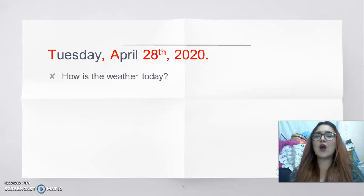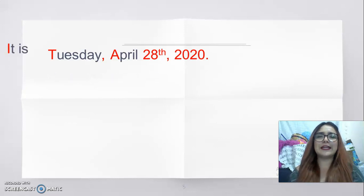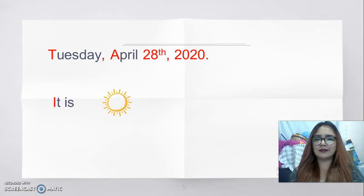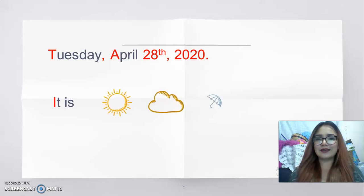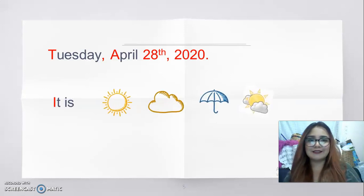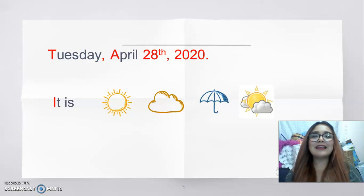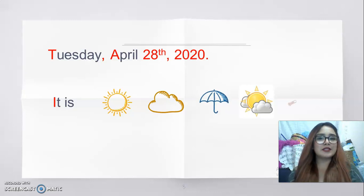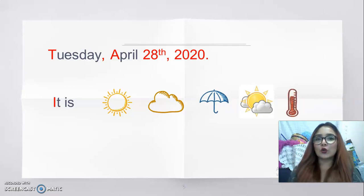How is the weather today? It is sunny, cloudy, rainy, or partly cloudy. What about the temperature? It is hot, cold, warm, or cool.